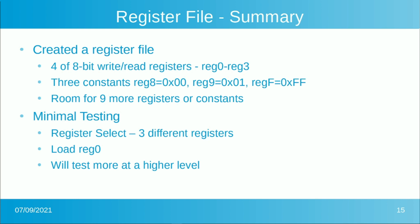That was a quick video — the register file is pretty simple, simpler than the counter since it's just moving data into a register and reading it out. What we've created is four 8-bit read-write registers, plus three constant registers: register 8 = 0x00, register 9 = 0x01, and register F = 0xFF. We've got plenty of room for more — we could add constants like register A = 0x02 as a mask value or whatever would be useful for a given application.